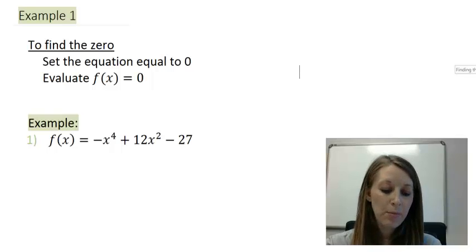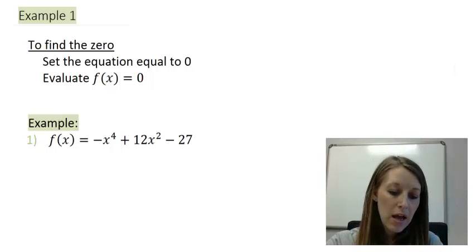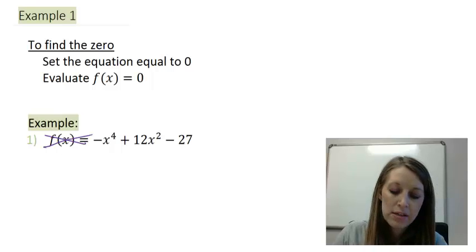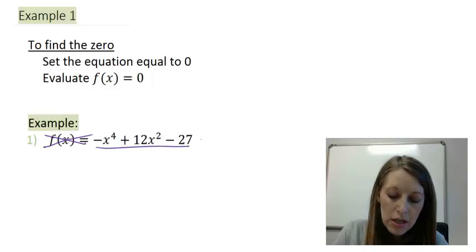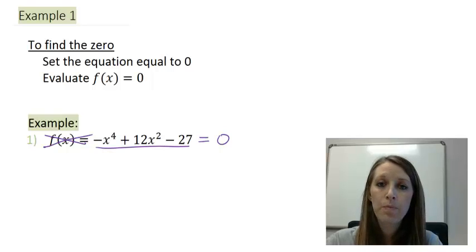My first example is f(x) = −x⁴ + 12x² − 27. If I want to find the zeros of this function, I just ignore the name f(x) and set the equation itself equal to zero, then solve using the methods we learned back in chapter one.